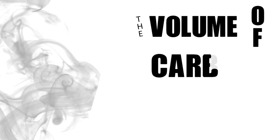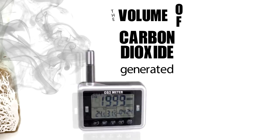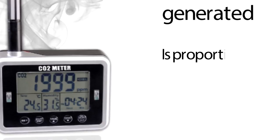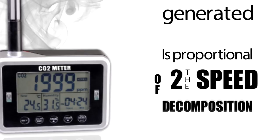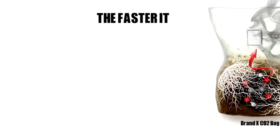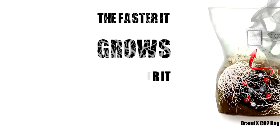The volume of carbon dioxide generated, or how much CO2 a ppm meter reads every 10 minutes, is directly proportional to the speed of decomposition. The faster it grows, the heavier it flows.